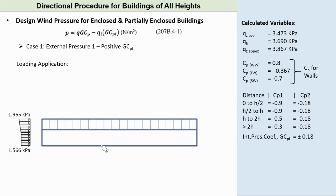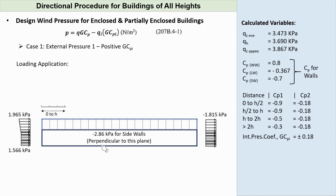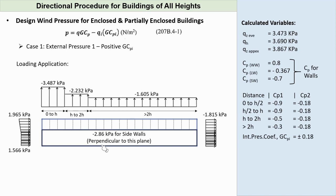Pressure in the windward wall varies from 1.566 to 1.965 kilopascals acting towards the surface. For the leeward wall, negative 1.815 kPa acting away from the surface. Side walls, negative 2.86 kPa. For roofs: distance 0 to H, negative 3.487 kPa; H to 2H, negative 2.232 kPa; and the rest of the roof is under negative 1.605 kPa.